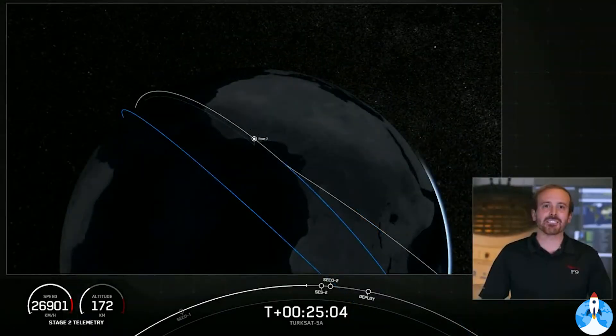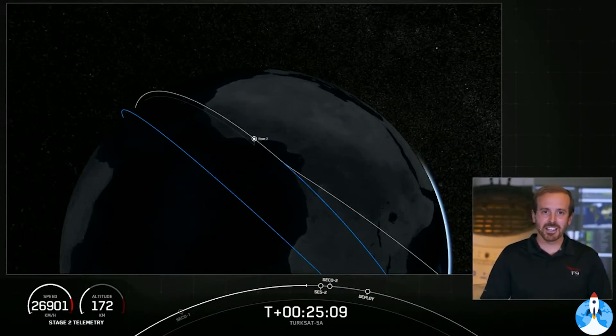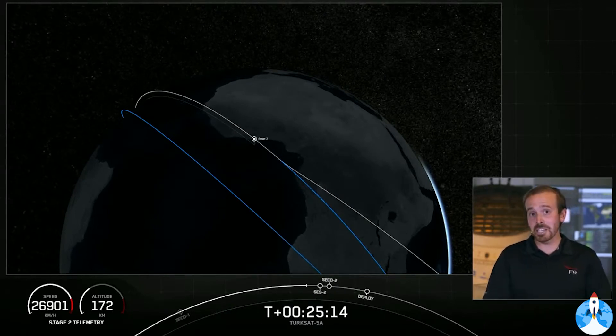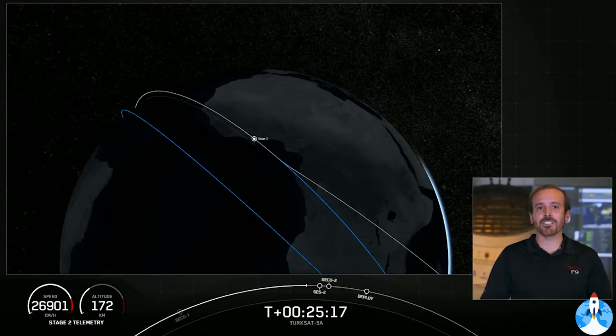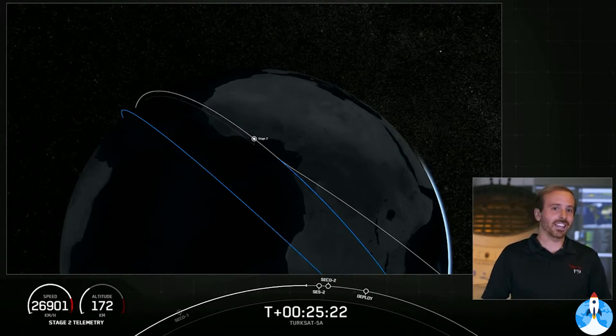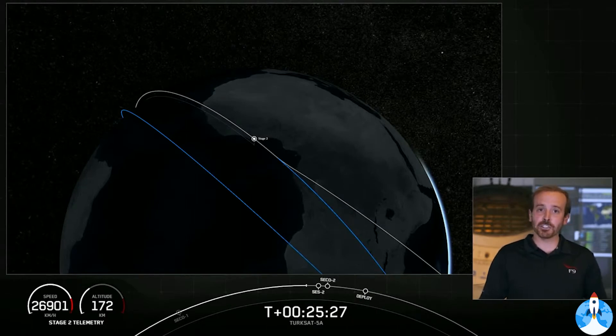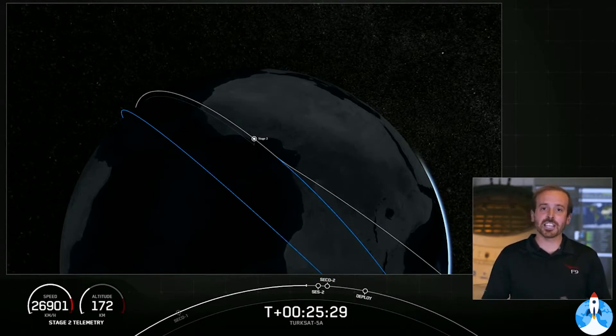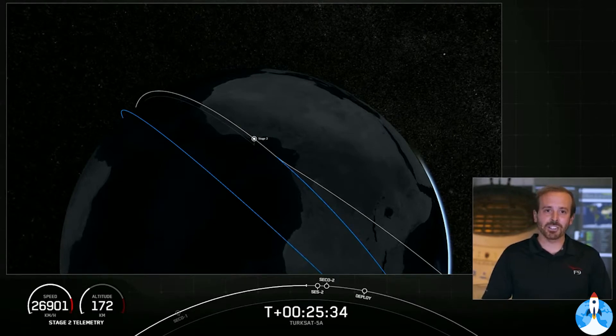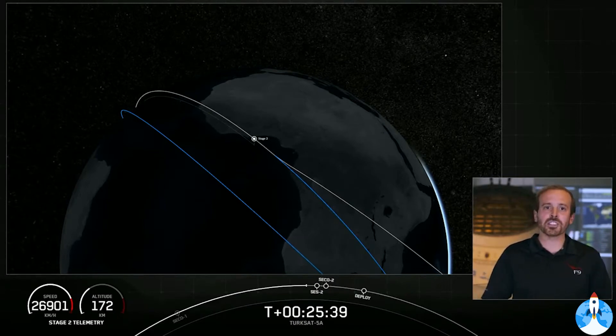Welcome back to the webcast of the Falcon 9 mission carrying the Turksat 5A satellite designed and developed by Airbus. Let's recap what's happened so far this evening. We had a smooth liftoff at 9:15 p.m. Eastern time. Two and a half minutes later, our first and second stage successfully separated. The first stage made its fourth flight and its fourth landing on our drone ship, just read the instructions. The second stage completed its first burn and successfully inserted today's payload and second stage into their planned parking orbit where they're currently at now.